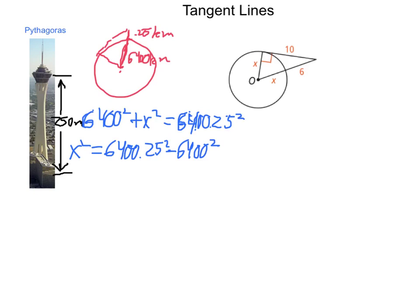Now these numbers tend to be a bit large. x squared is going to equal 6,400 and a quarter squared, which is 40,963,206.01. And then 6,400 squared is 40,960,000 kilometers.